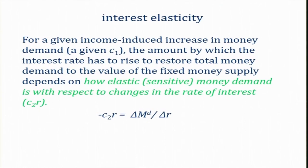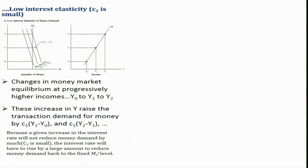For a given income-induced increase in money demand, the amount by which the interest rate must rise to restore total money demand to the fixed money supply also depends on how elastic or sensitive money demand is with respect to changes in the rate of interest — that is, the parameter c₂, where -c₂r = ΔMd/Δr. The relationship between the interest elasticity of money demand and the slope of the LM curve can be examined by considering two cases.